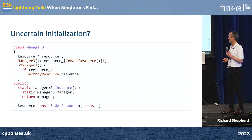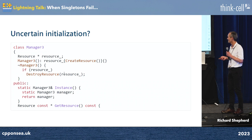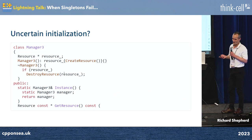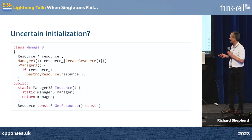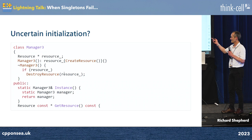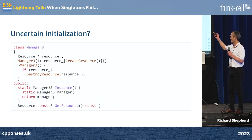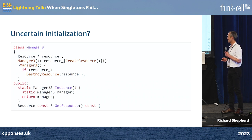We would then get a crash. The fact that I've simplified it here to look like a pointer, you can probably guess what's going wrong. The problem is create resource doesn't always succeed. The problem we had was this is a singleton — the singleton got created once. Whether or not the internal resource was constructed, it was checked for locally, so everyone thought everything's good.